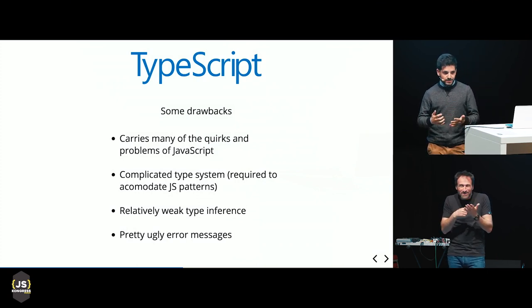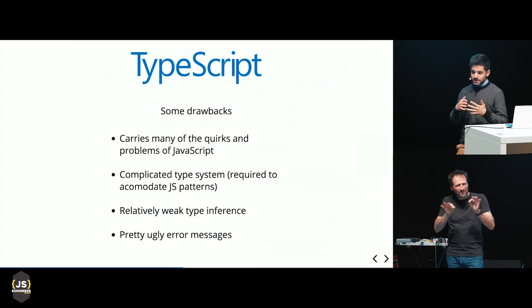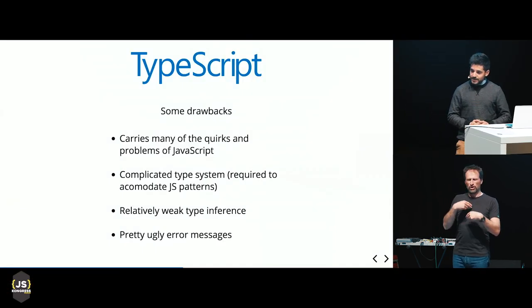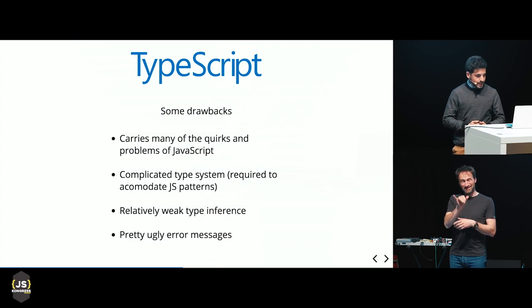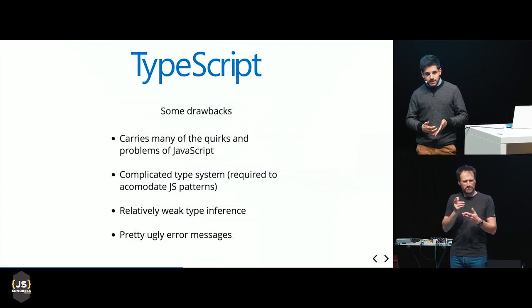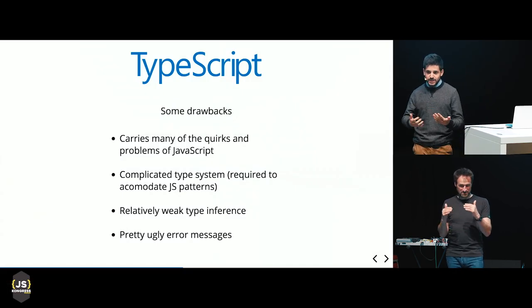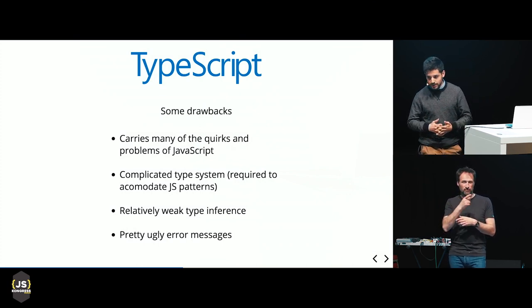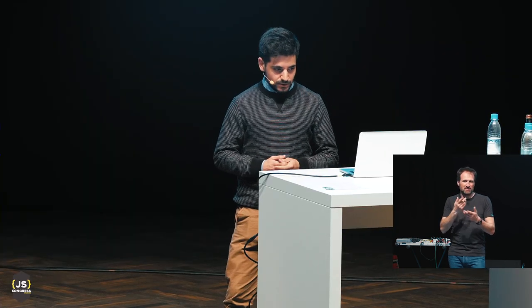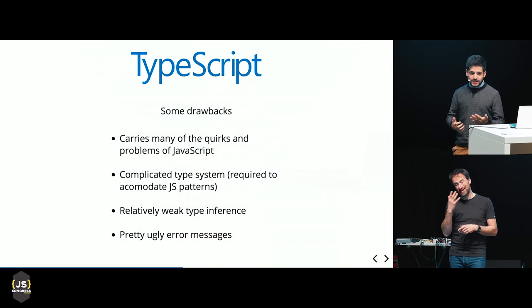TypeScript also has a really complicated type system because it has to accommodate all the patterns we use in JavaScript. We do some crazy things with it — sometimes a function returns an array, sometimes numbers. This means types in TypeScript can get really hard to understand, write, and read. Because of this, we have relatively weak type inference — the ability of the compiler to automatically detect and assign types — and that breaks easily with advanced features. And it usually has some pretty ugly error messages, making it hard to correct mistakes.